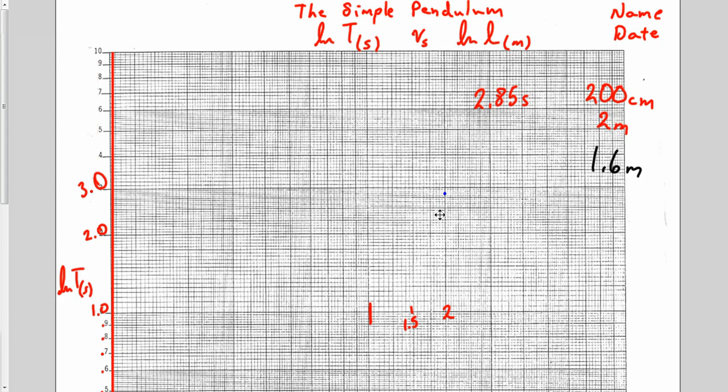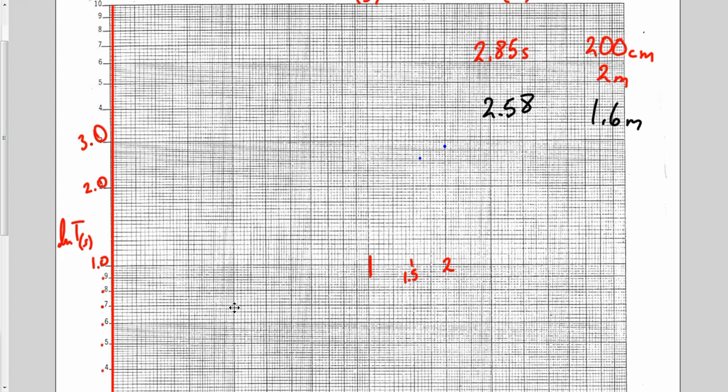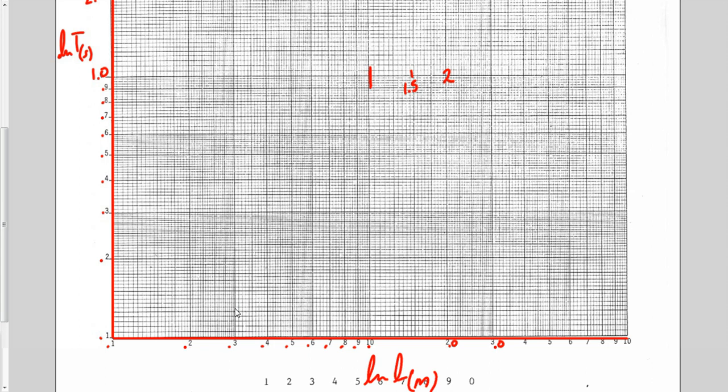My next data point was 1.6 meters and 2.58 seconds. That's 1.6 meters, and I need to go up to 2.58 seconds—2.5 would be right there. I'll continue to fill in the data. My last data point was 20 centimeters and 0.90 seconds. 20 centimeters would be 0.2 meters, and 0.9 seconds would be here. This is what's neat about a log graph—how this data looks.